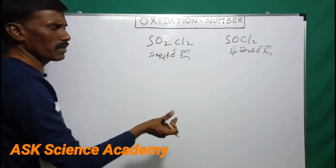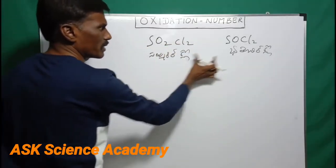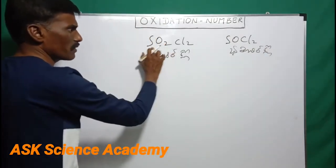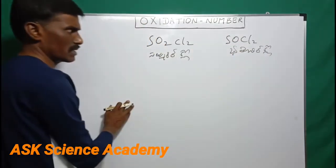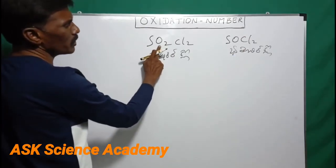SO2Cl2 name is sulfuryl chloride, SOCl2 name is thionyl chloride. Sulfur oxidation state. Now we'll know sulfur, chlorine, oxygen.